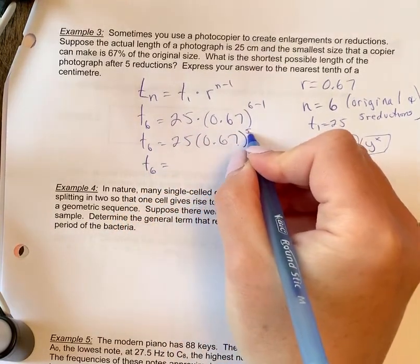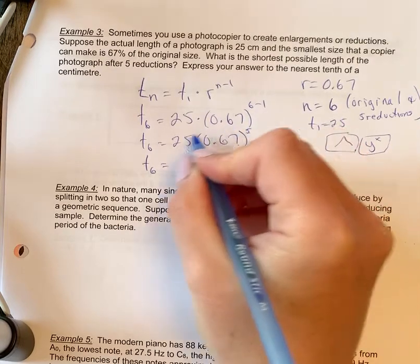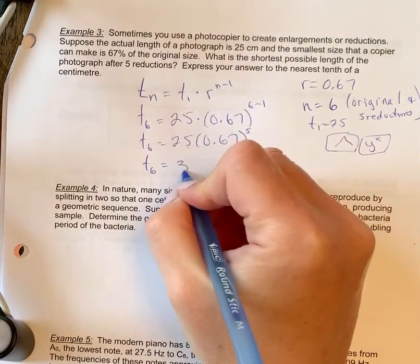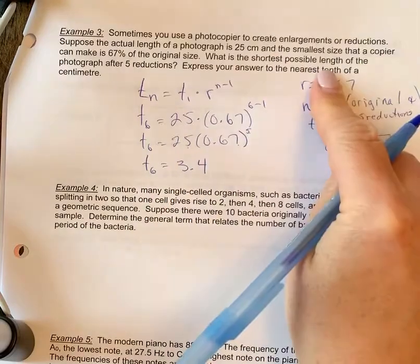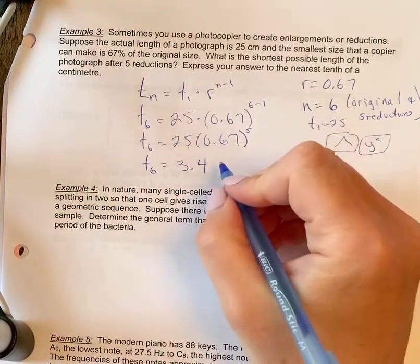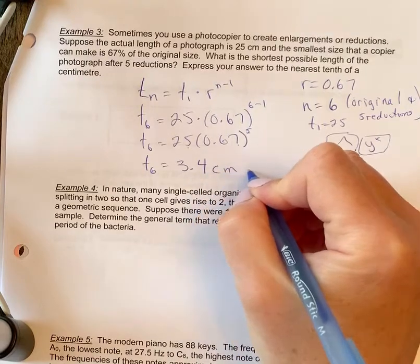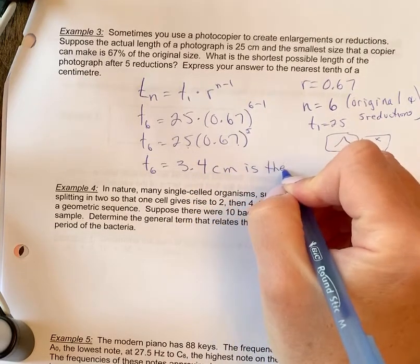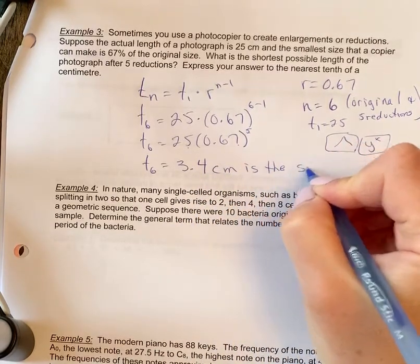So 0.67 to the exponent five first in your calculator times by 25, and you're going to get 3.4. So nearest tenth is one decimal, and this is centimeters. So 3.4 centimeters is the shortest possible length.